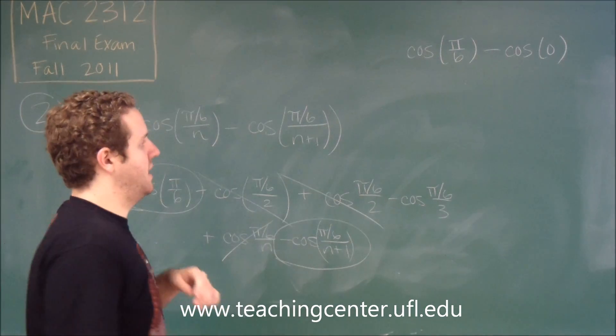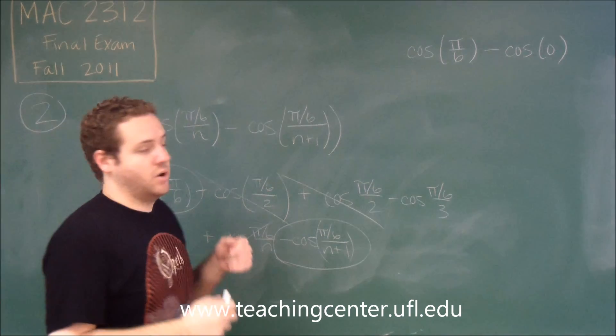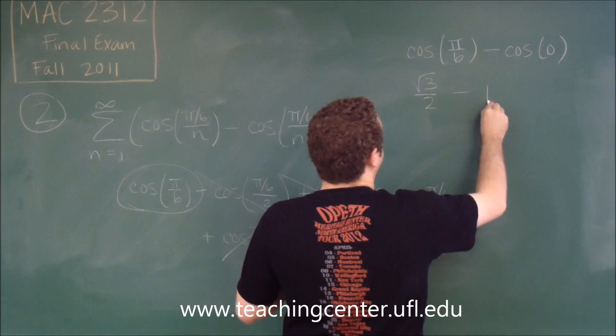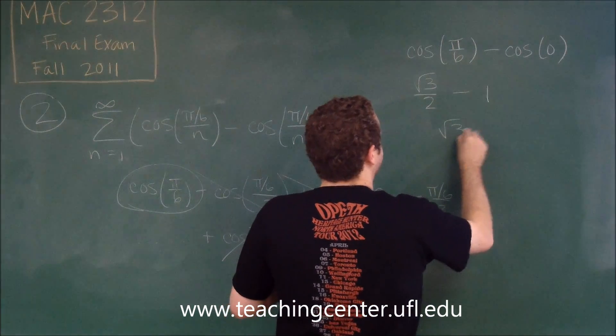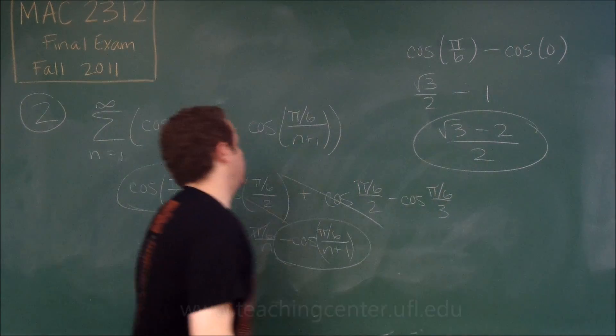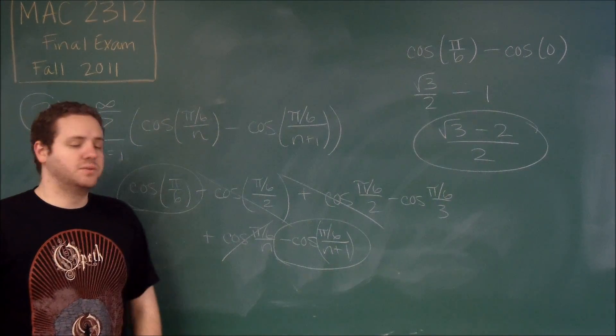So now it's just a matter of knowing your trig angles. Cosine pi over 6 is square root of 3 over 2. Cosine of 0 is 1. So if you were to get a common denominator, you would get square root of 3 minus 2 over 2.